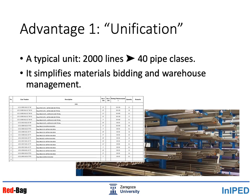The first advantage of using pipe classes is what we call unification. For example, a typical unit might have between 2,000 and 5,000 lines. Shall we use 2,000 different materials, wall thicknesses, etc., one for each line? Of course, that would not be very efficient. By grouping the lines which are similar in pressure, temperature, and fluid features, we can simplify these 2,000 lines into only 40 pipe classes.